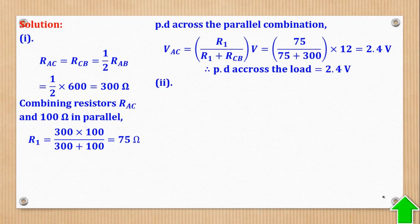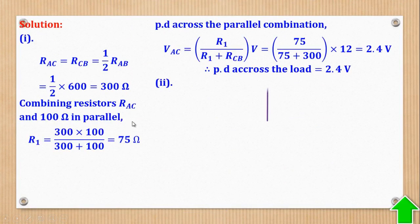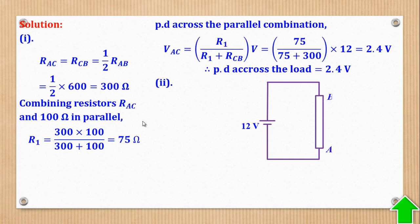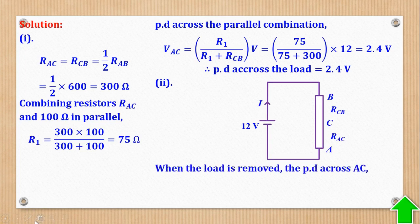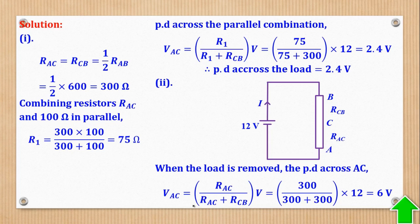For part two, they want PD across AC when the load is removed. When the load is removed, PD across AC is RAC over total resistance, multiplied by the total PD. RAC is 300, RBC is also 300, so the total is 300 plus 300, everything multiplied by 12V to give 6V. That is the answer for part two.